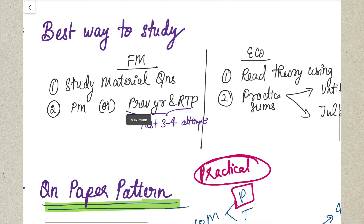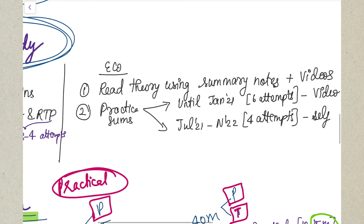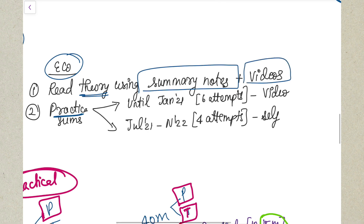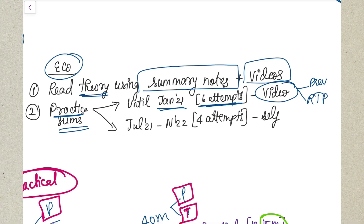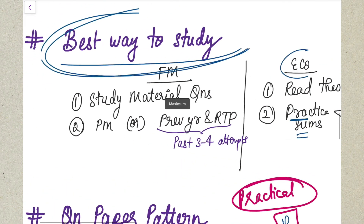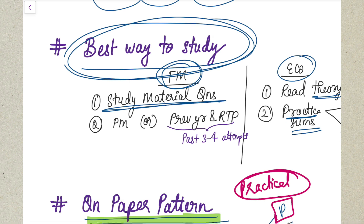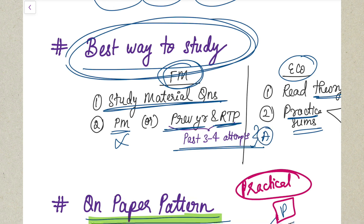Now let me tell you the best way to study your FM-Eco paper. For Economics, you need to read both theory and practical sums. For theory, use summary notes and also take help of my videos. For sums, I've made a video covering all previous year questions and RTP questions from May 2018 until January 2021 - the first six attempts. For the last four attempts, solve them yourself. For Financial Management, do all your study material questions, and if possible cover the practice manual from the old syllabus. Otherwise, previous year questions and RTP questions from the last three to four attempts are a must, especially for the four golden chapters.